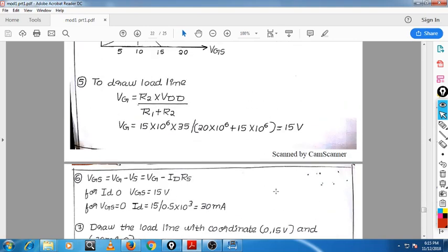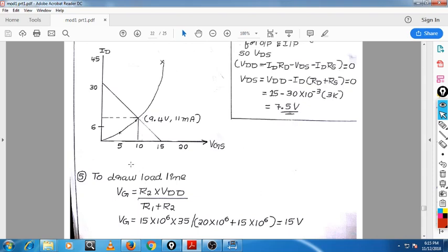Now you can draw the load line and draw the characteristics curve by using 15 and 30. Join these points. This is the point where both equations are satisfied - that is our transfer characteristics and the DC load line. The value we got is 9.4V and 11 milliamperes. That is VGS. This is the operating point.